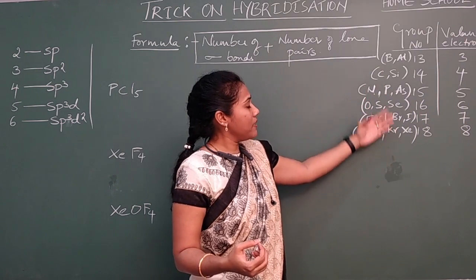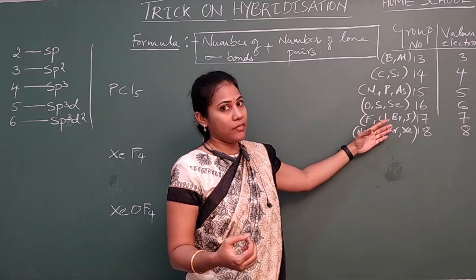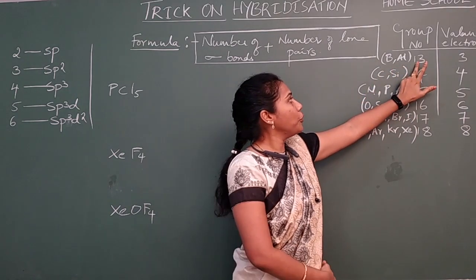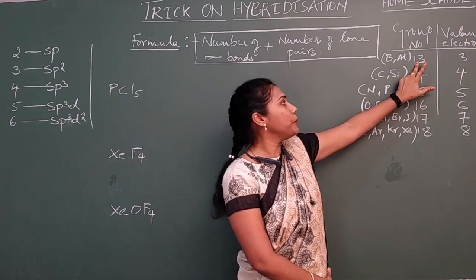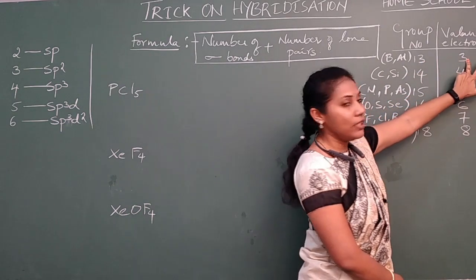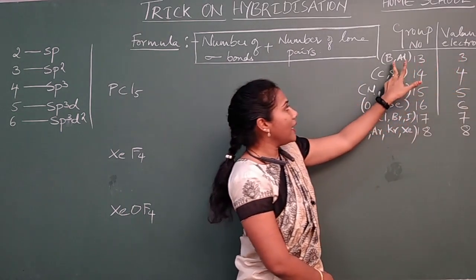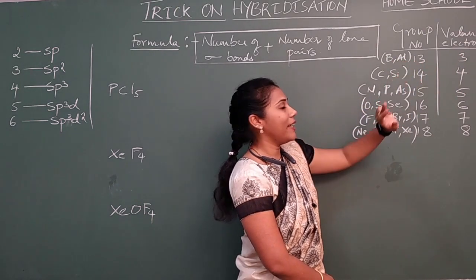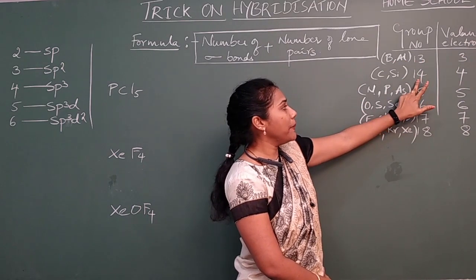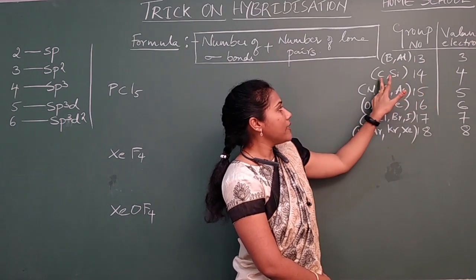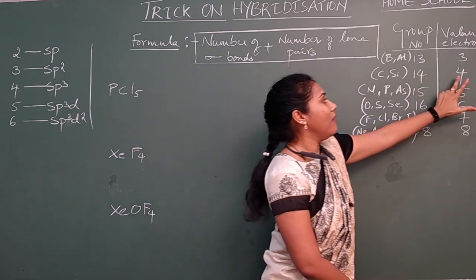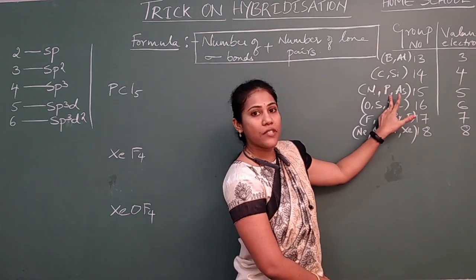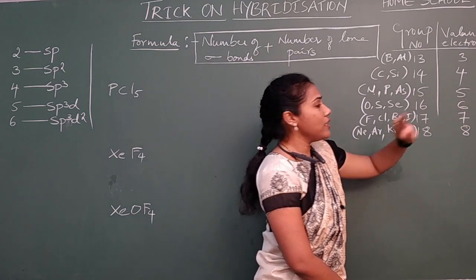I have listed some common elements on the board. Group 13 elements, like boron and aluminium, have 3 valence electrons. Group 14 elements, like carbon and silicon, have 4 valence electrons. Group 15 elements — nitrogen, phosphorus, and arsenic — have 5 valence electrons.